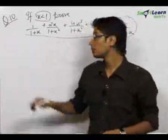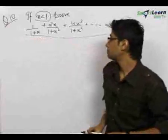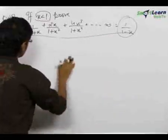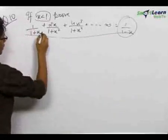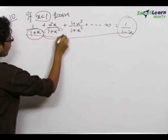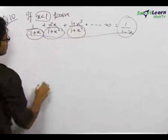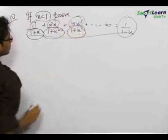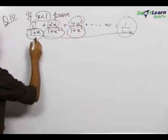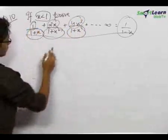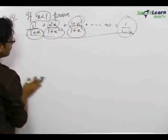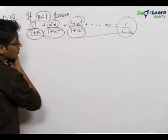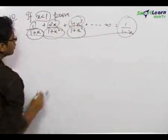How would we be able to do this question? The trick behind this question is that the terms written in the denominators have their differentials written in the numerators. 1+x has differential equal to 1; 1+x² has differential equal to 2x; and 1+x⁴ has differential 4x³, which are written in the numerators.